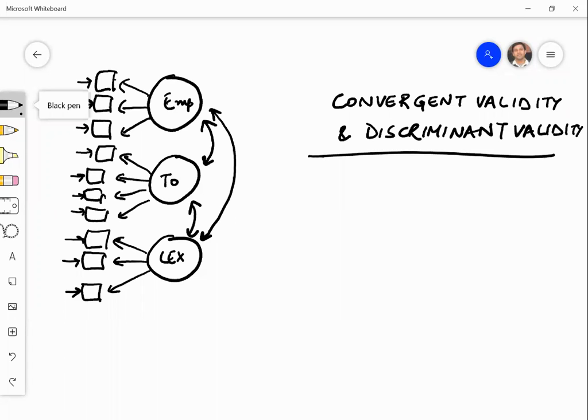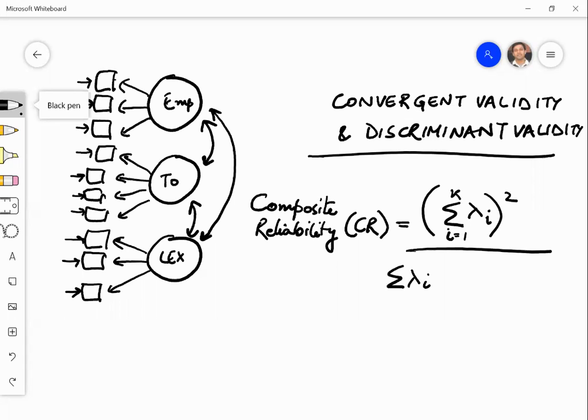In order to compute these, there are two indices that are computed. One is called the composite reliability which is denoted by CR. And the formula for CR is it goes like you have i varying from 1 to k number of items in the construct, summation lambda i whole square divided by summation lambda i whole square again for all i plus summation 1 minus lambda i square for all.